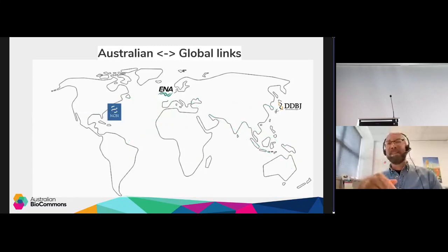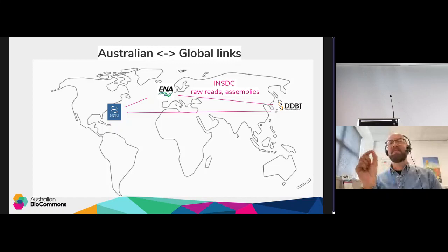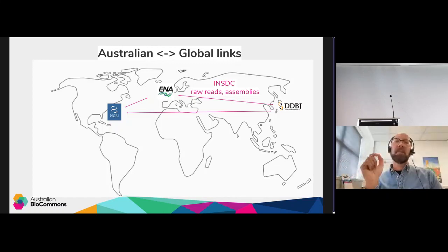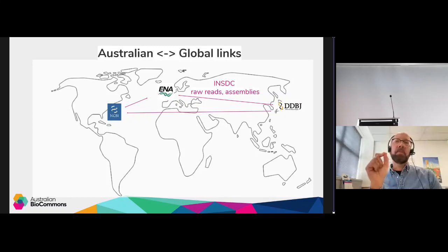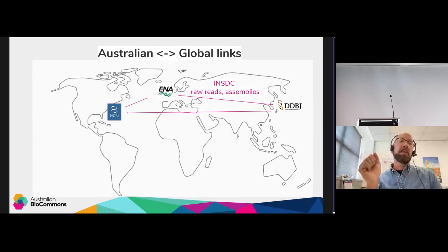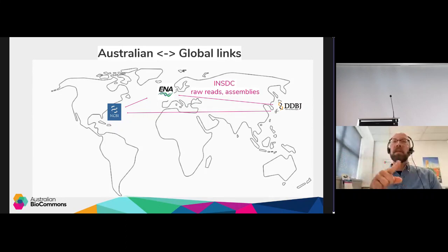Another great example from the molecular space is the long-standing collaboration to build the International Nucleotide Sequence Database — a collaboration between ENA in Europe, the DNA Database of Japan, and the SRA in the US. These repositories exchange raw reads and assemblies.